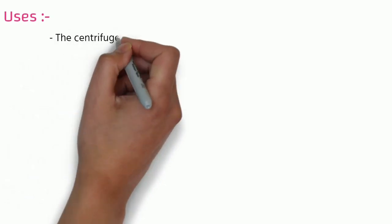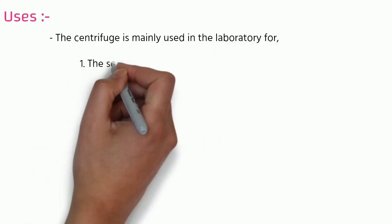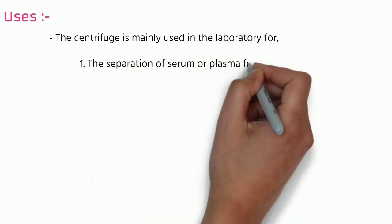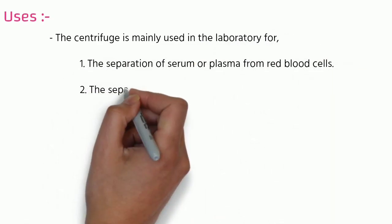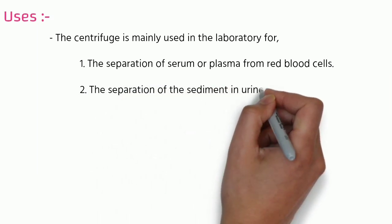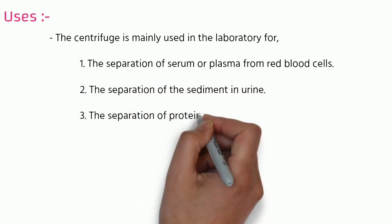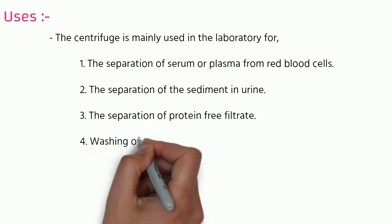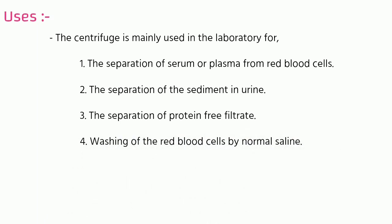Centrifugation is mainly used for: separation of serum or plasma from red blood cells (which will be covered in a future lecture), separation of sediment in urine, separation of proteins as a pre-filtrate, and washing of red blood cells with normal saline.